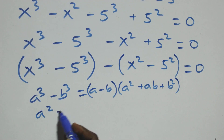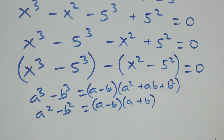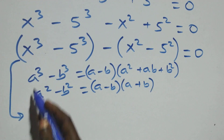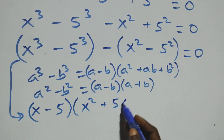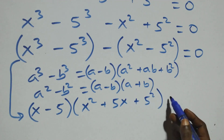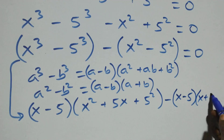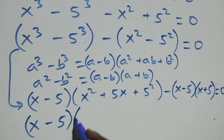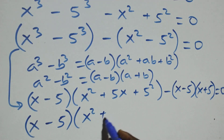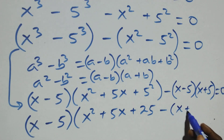Applying these identities, the expression becomes (x minus 5)(x squared plus 5x plus 5 squared) minus (x minus 5)(x plus 5) equals zero. We notice (x minus 5) is a common factor. Factoring it out, we get x minus 5 times the bracket containing x squared plus 5x plus 25 minus (x plus 5).